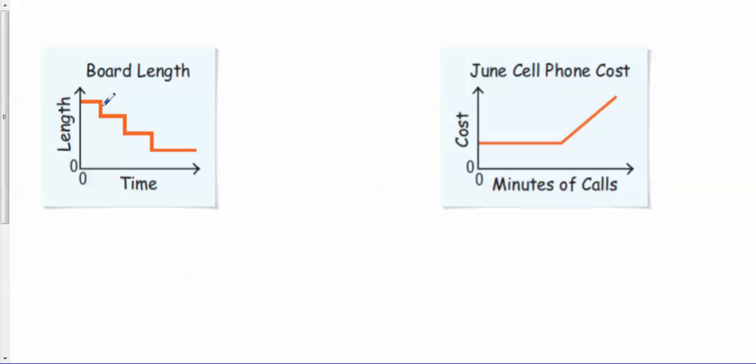This means that the board remained the same length constantly. Then it has a sharp dip - what happened there? Must mean that they cut the board. Then for a period of time it remained constant, then they took another cut. At this point they slice the board again, and then over time it remained constant.